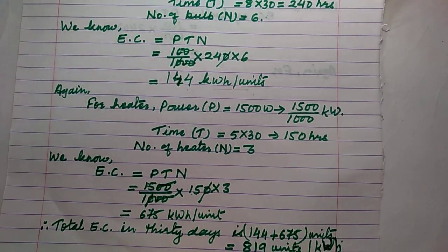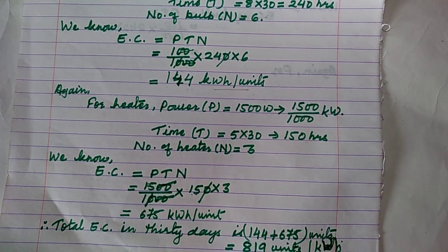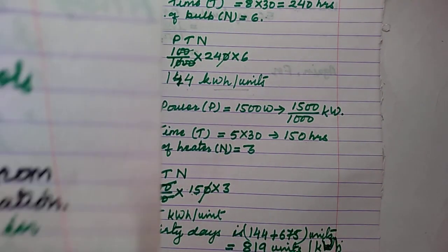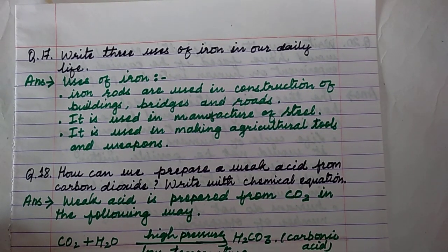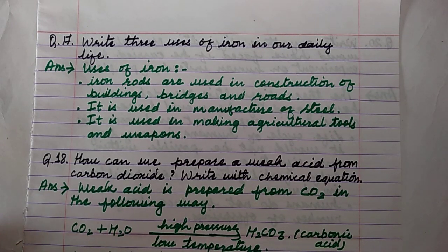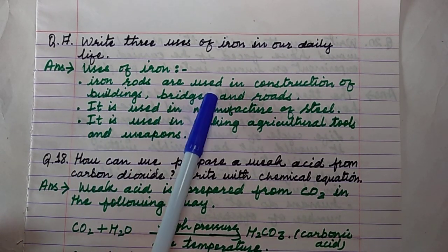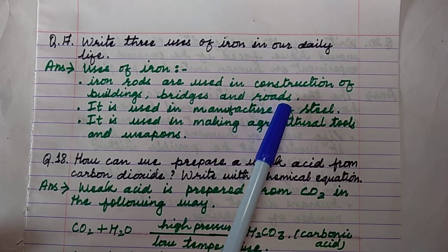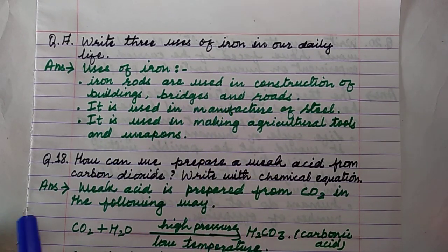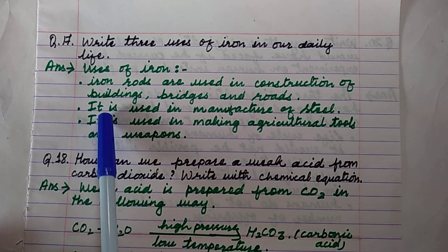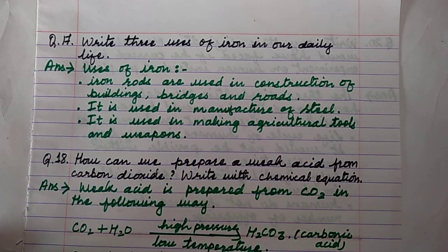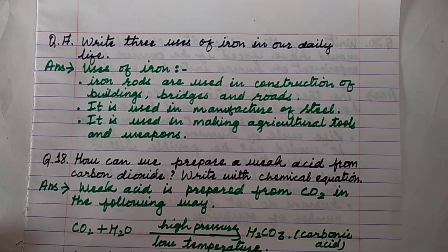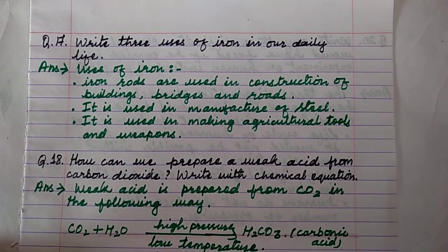Now question number 17: uses of iron in our daily life. Iron rods are used in construction of buildings, bridges, roads, and pillars. Iron is used in manufacturing steel and in making agricultural tools and weapons of different types. Iron is a very useful metal, and many articles used in everyday life are made of iron.